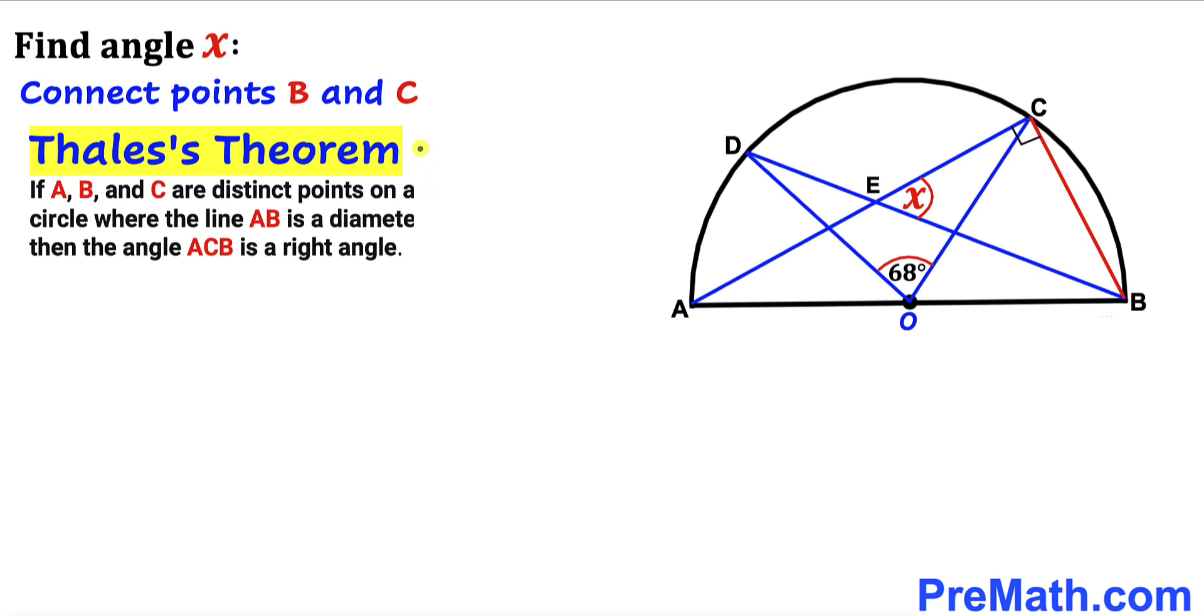Now let's recall the Thales theorem. According to this theorem, if A, B and C are distinct points on the circle, and AB is the diameter of this semi-circle, then this angle ACB is going to be 90 degrees.